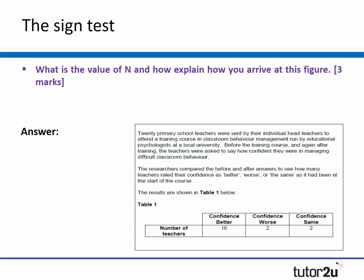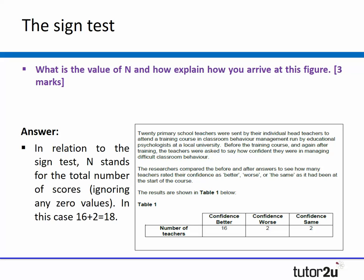This wasn't one of the questions, but we can interpret it as if it was. What is the value of n and explain how you arrived at this figure? As we said earlier, the value of n is all of the scores excluding any nil scores. We're going to exclude that confidence the same at two, which means we add the 16 and the two together, which gives us an n value of 18.